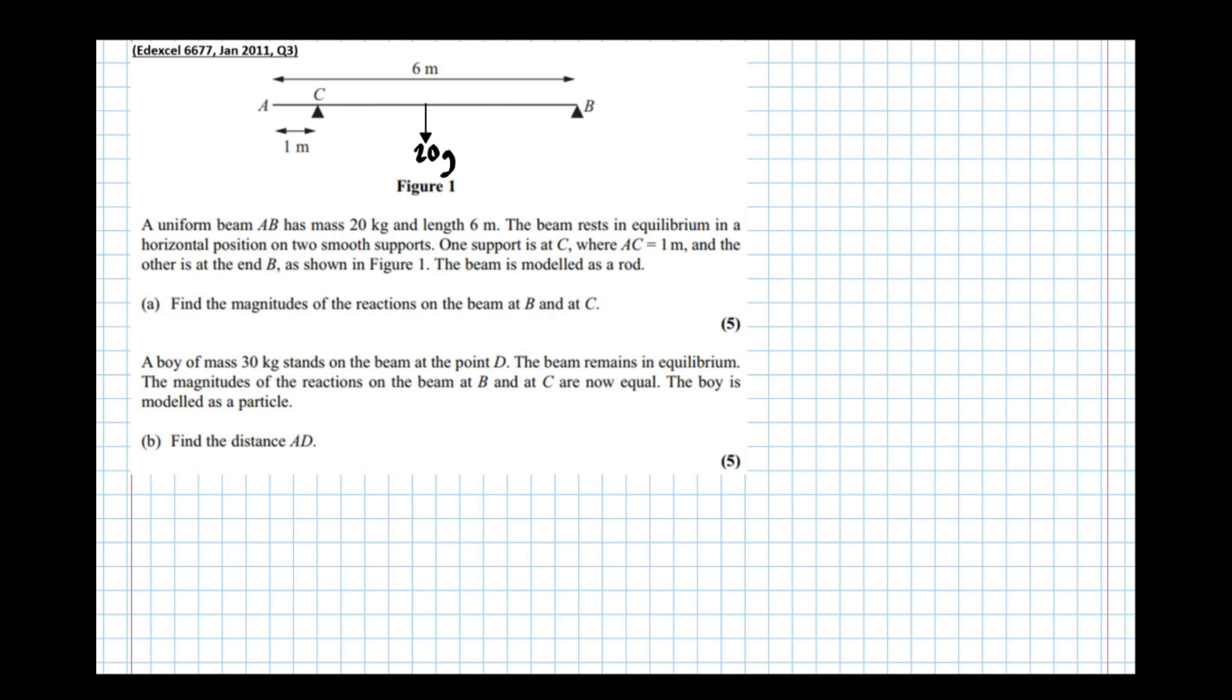The beam rests in equilibrium in a horizontal position on two smooth supports. One support is at C where AC is 1 meter and the other is at the end B as shown in Figure 1. The beam is modeled as a rod.